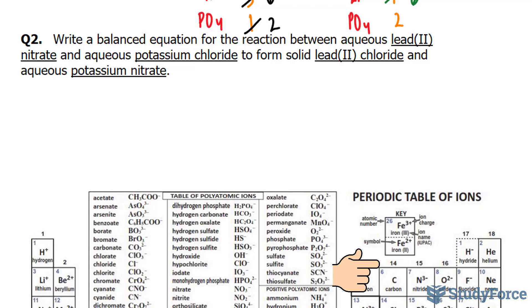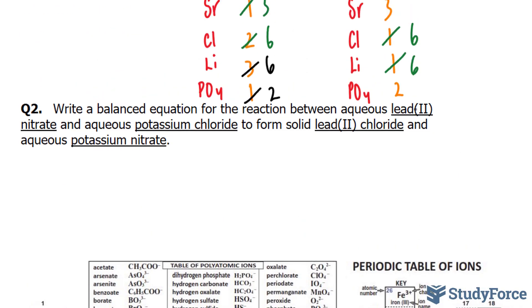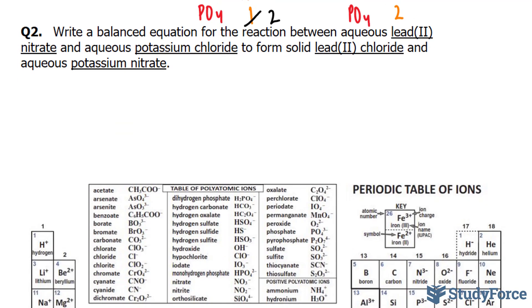Starting with lead(II) nitrate, lead, which has the chemical symbol Pb, has 2 charges, 2 and 4. We're told that it has a charge of 2. Nitrate, on the other hand, is a polyatomic ion. In fact, it has the chemical formula NO3 1 minus.